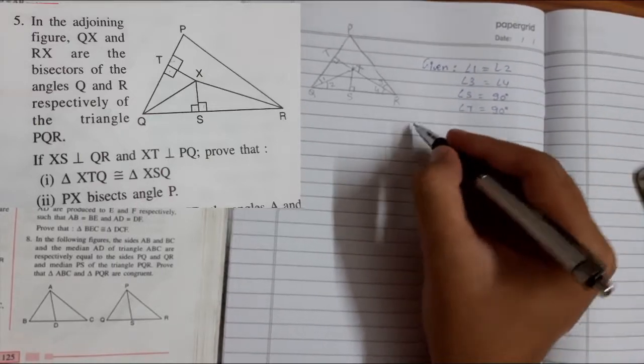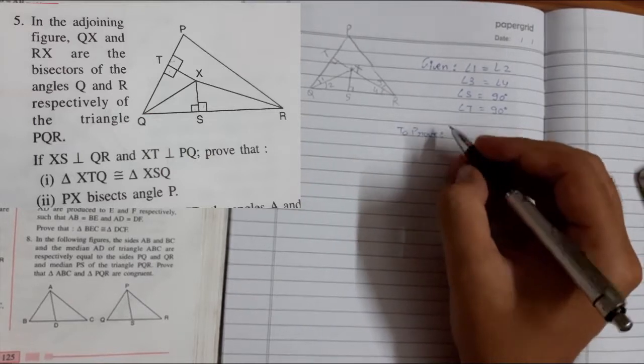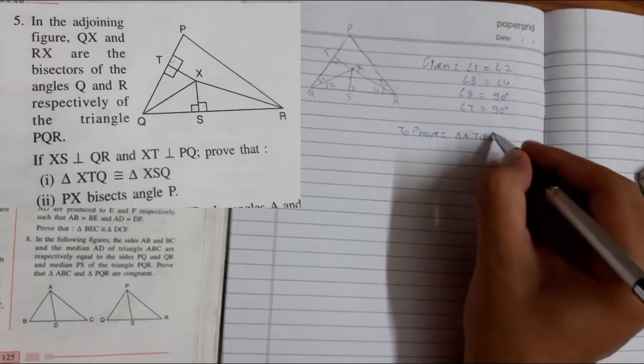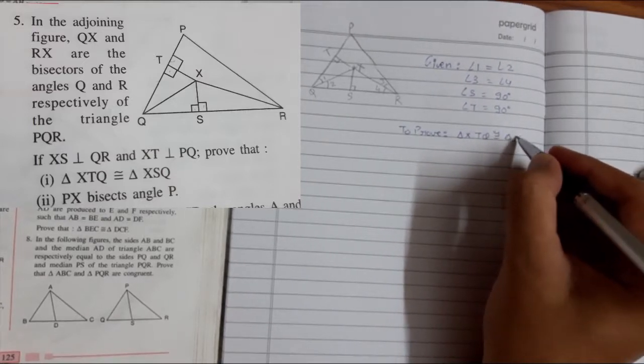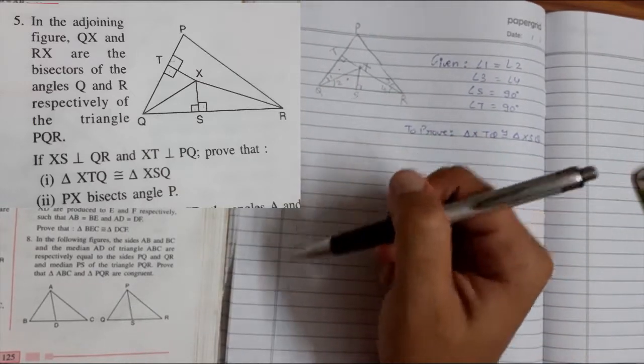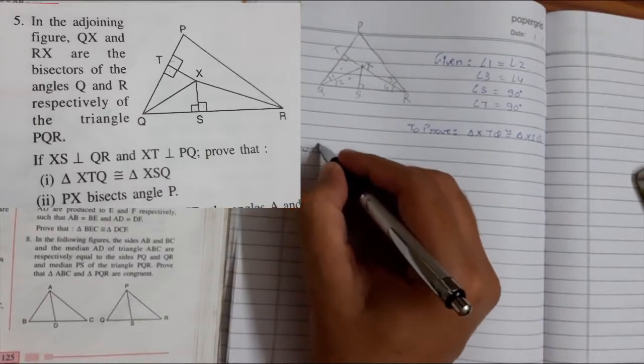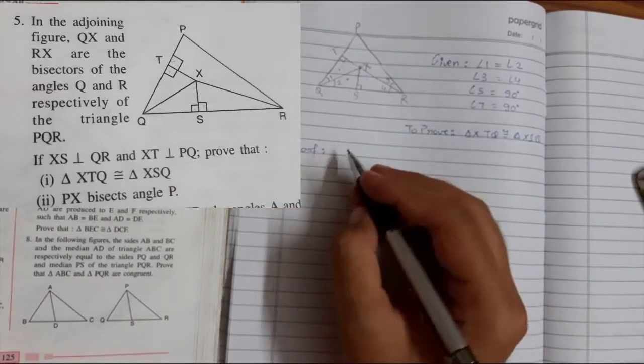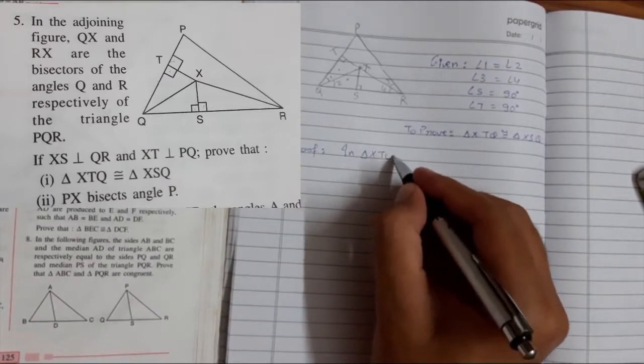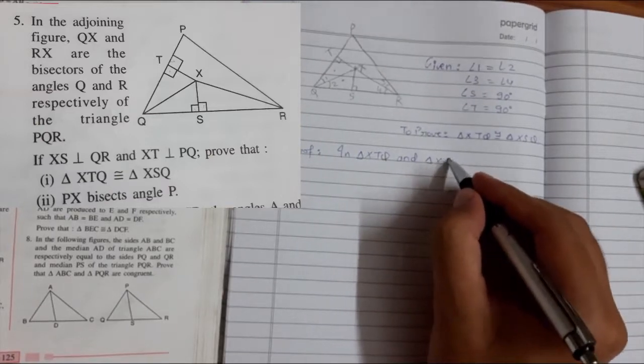Now what they are asking us to prove is triangle XTQ is congruent to triangle XSQ. This triangle needs to be congruent with this triangle. So we have to take these two triangles only. In triangle XTQ and triangle XSQ.